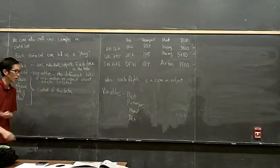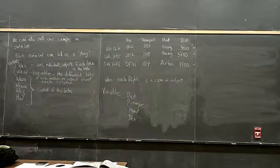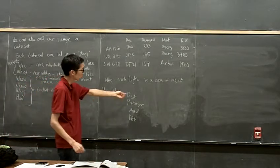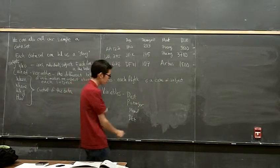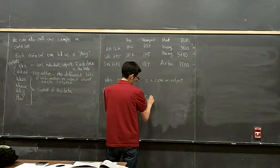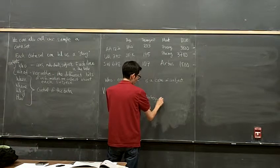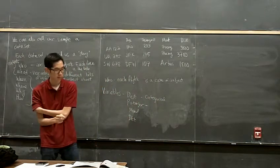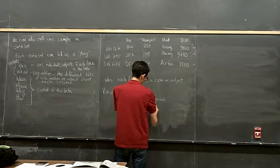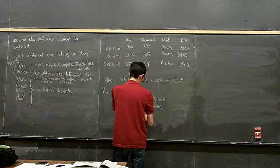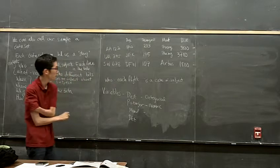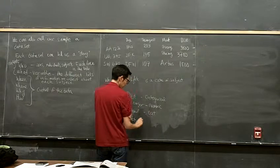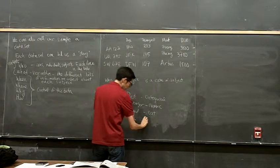Which ones are categorical and which ones are numeric? Destination — categorical. Passengers — numeric. Manufacturer — categorical. And the distance — numeric.